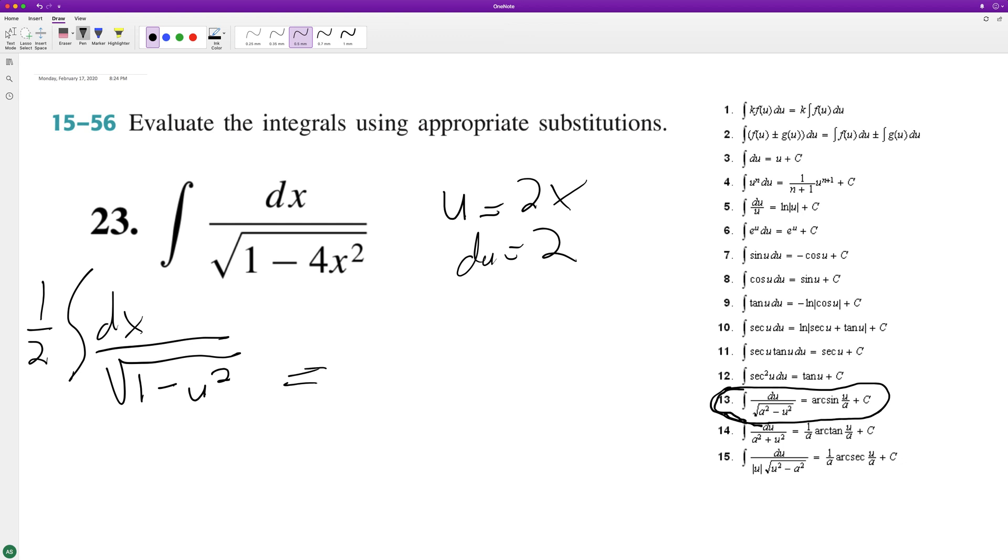So when we do this, we're going to end up with 1 half inverse sine of u over 1, or just u, plus c.